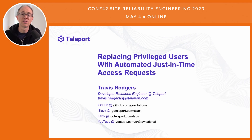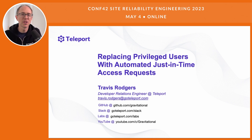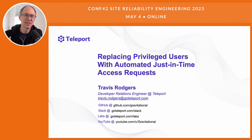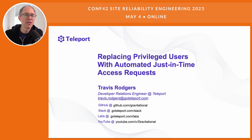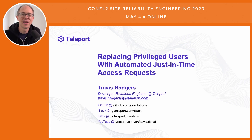We could start this off with some history or with a bunch of definitions, but instead I'm going to start off with an end state in mind — an ideal end state for replacing privileged users with automated just-in-time access requests. There are going to be four parts to this ideal state, and then I'll move to a practical example using the open-source solution, Teleport. If all that sounds good, let's go ahead and get started.